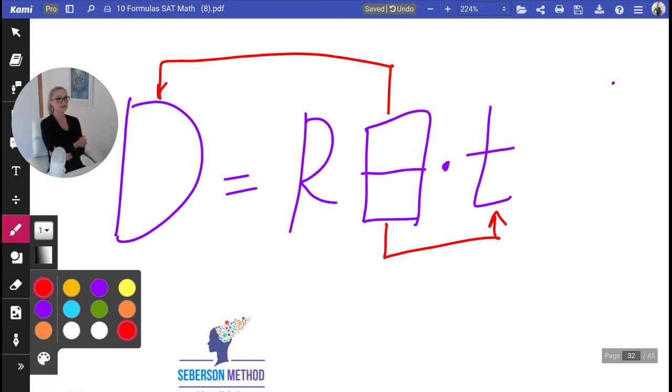So let me give you an example. Let's say we have a rate in kilometers per second. Guess what? The time will have to be in seconds and the distance will have to be in kilometers.